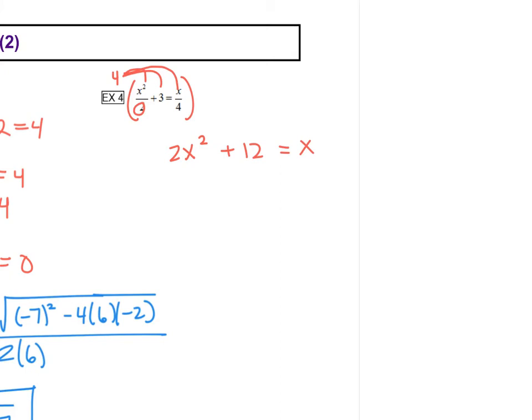Alright, we want everything on one side, 0 on the other side, so I'm going to subtract x from both sides, leaving us with 2x squared. I'm going to put that minus x after the x squared, so everything's in the proper order, plus 12 equals 0.